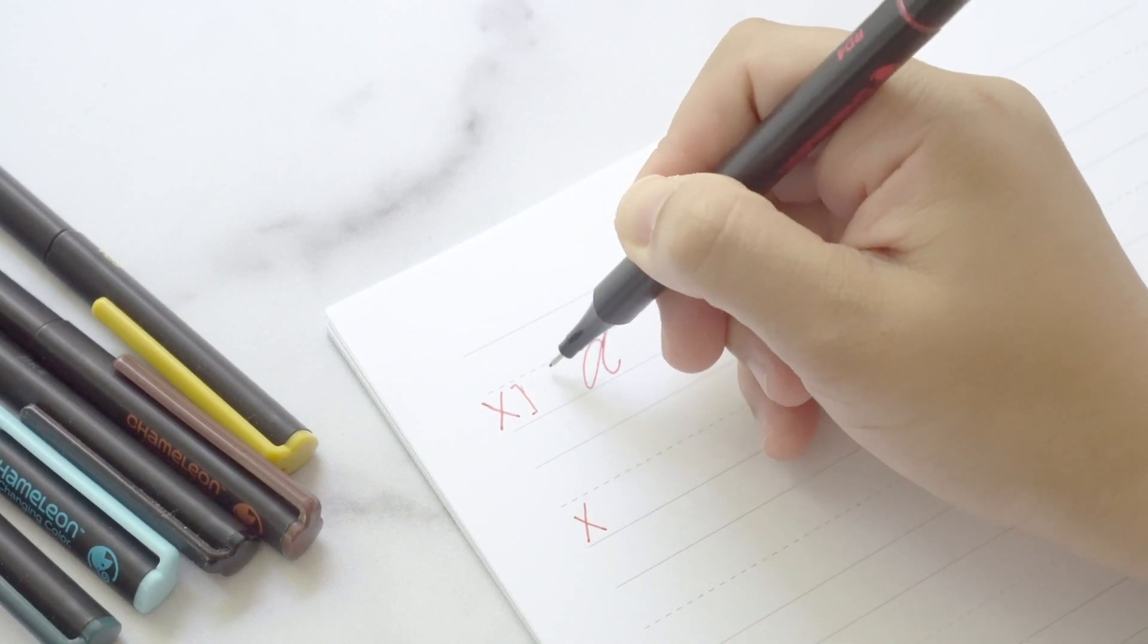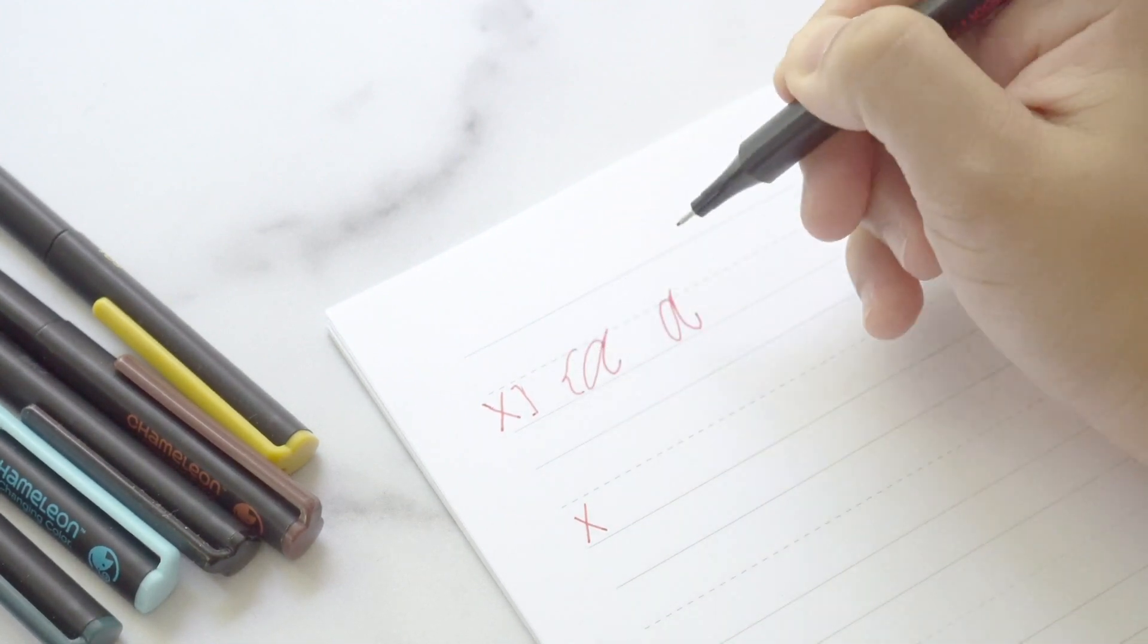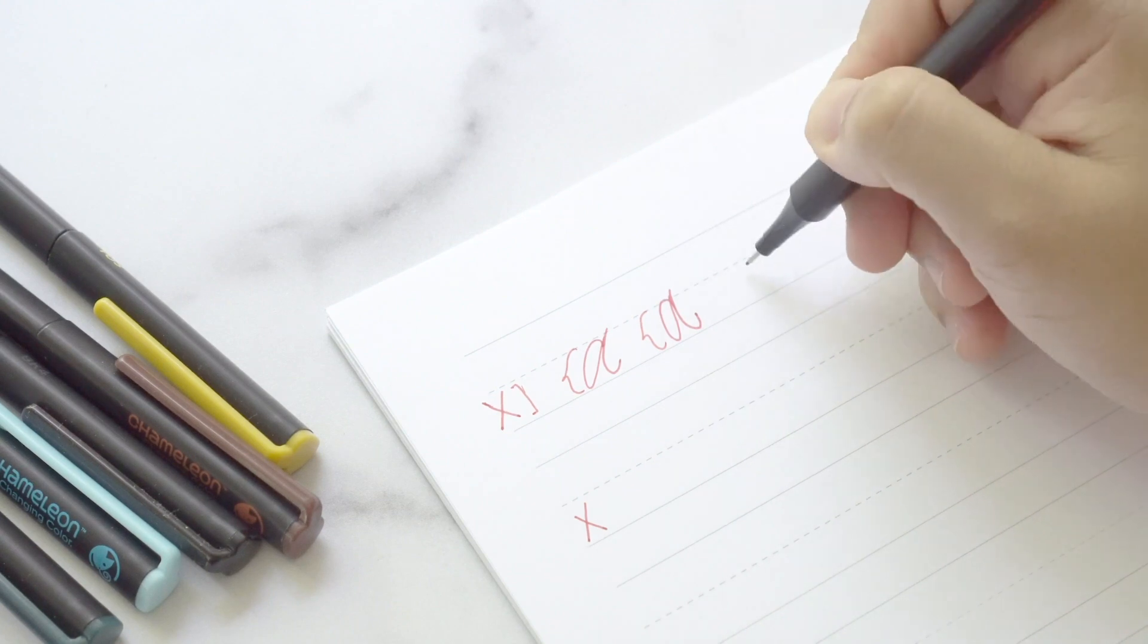Basically, that's the height of your small letters, like the A, like this, or even an O.